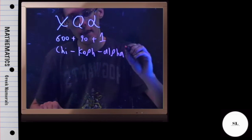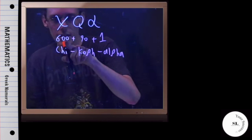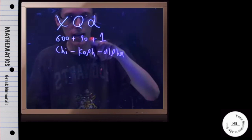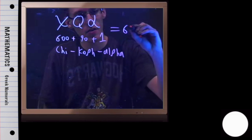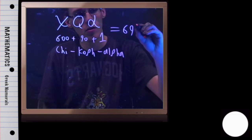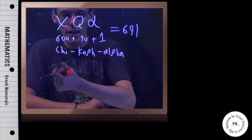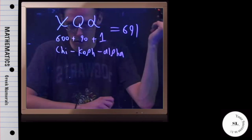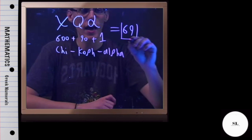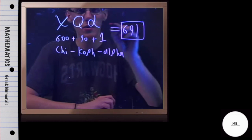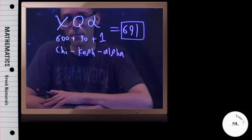And so, if you just add all these values together, you've got 690 and 1, or in other words, 691. Or you could say chi, koph, alpha, which is 691. So that is how the Ionic Greeks would write this number, and that is that example.